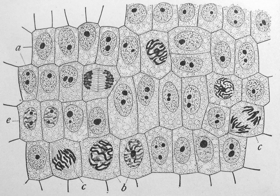Flagella are organelles for cellular mobility. The bacterial flagellum stretches from the cytoplasm through the cell membranes and extrudes through the cell wall. They are long and thick thread-like appendages, protein in nature. A different type of flagellum is found in archaea and a different type is found in eukaryotes.